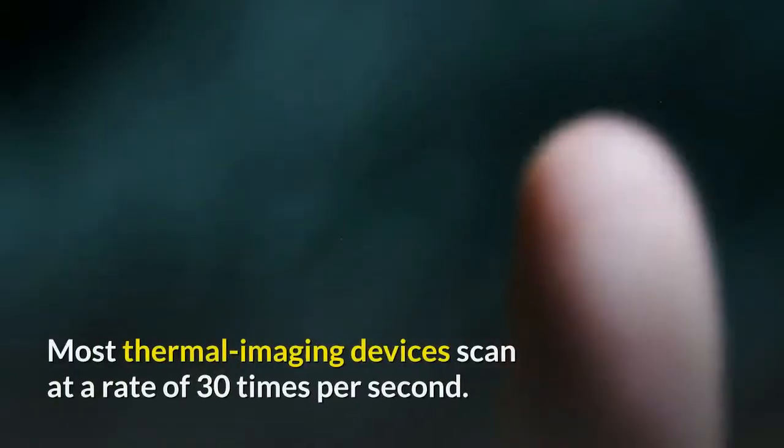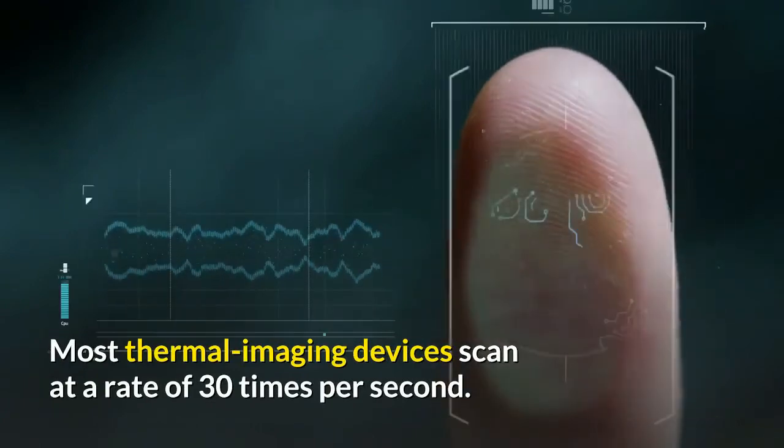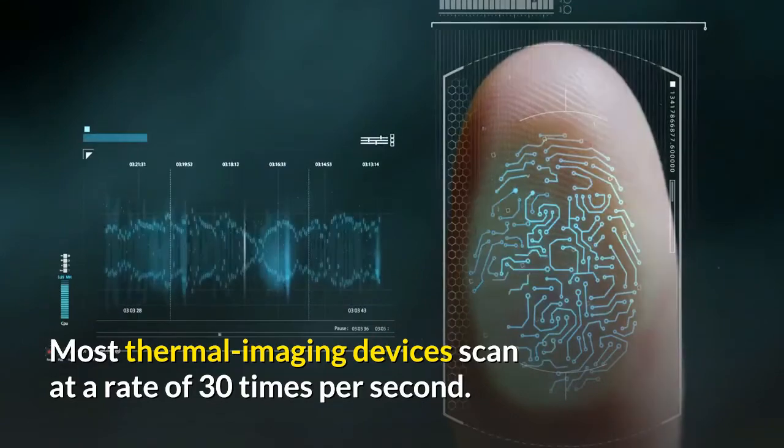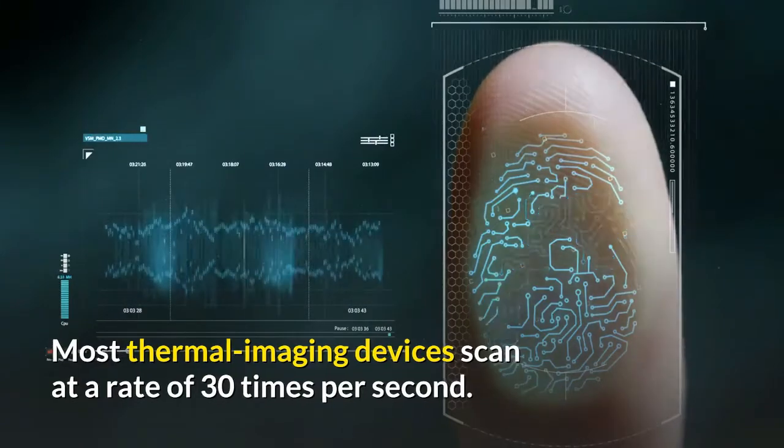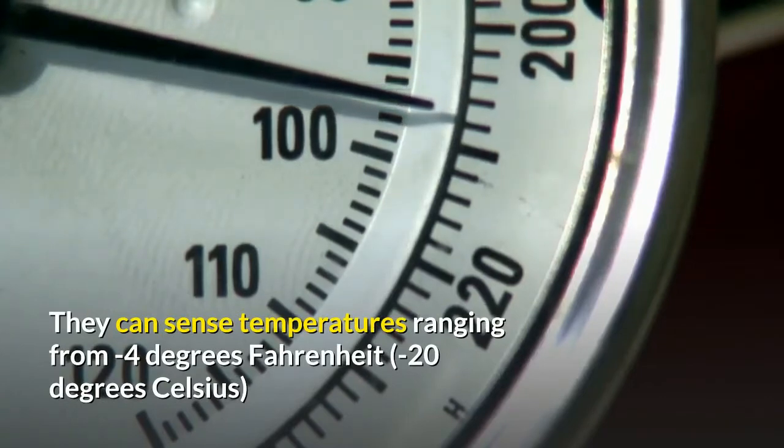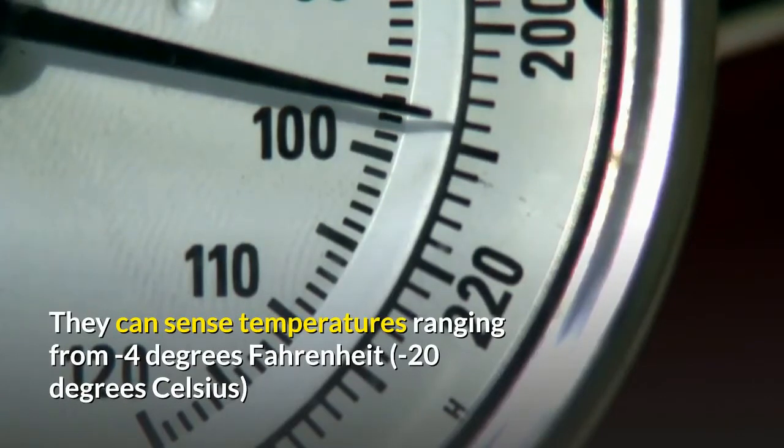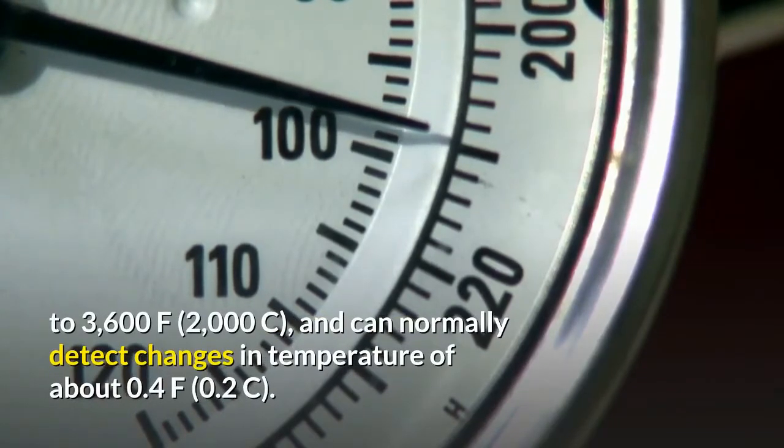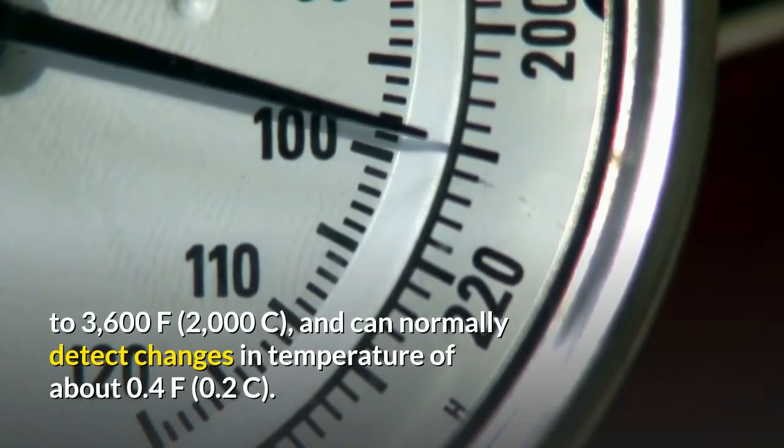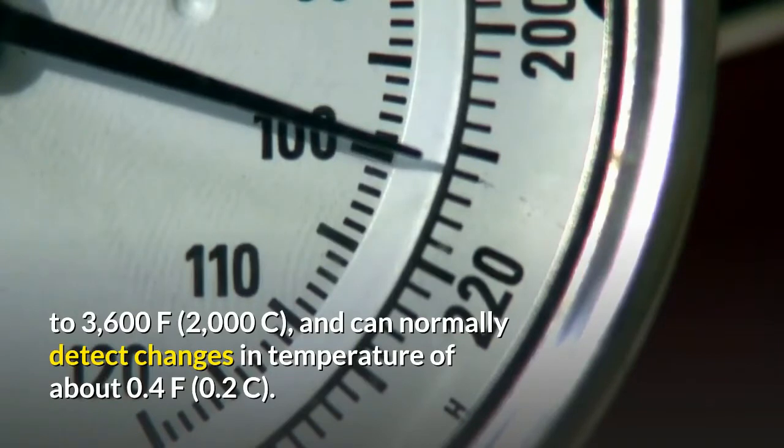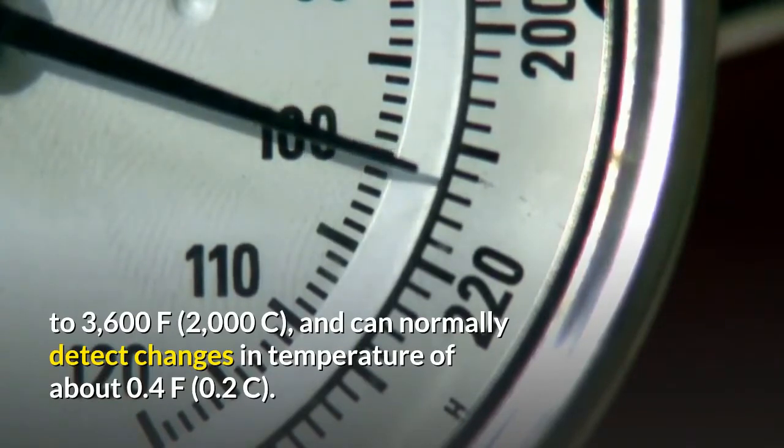Most thermal imaging devices scan at a rate of 30 times per second. They can sense temperatures ranging from negative 4 degrees Fahrenheit to 3,600 degrees Fahrenheit and can normally detect changes in temperature of about 0.4 degrees Fahrenheit.